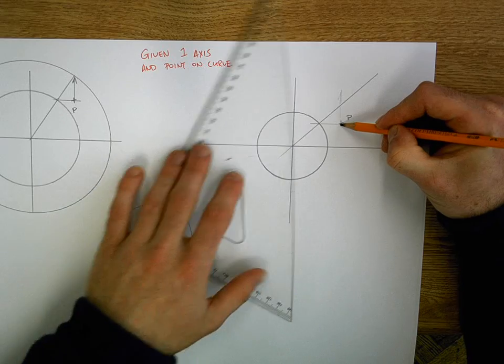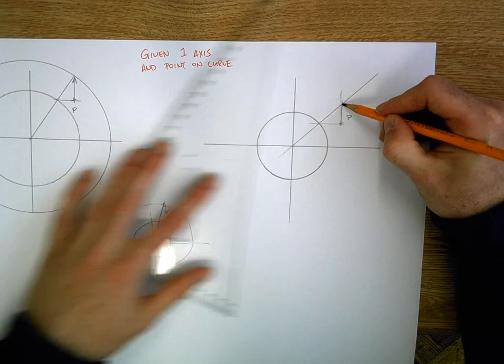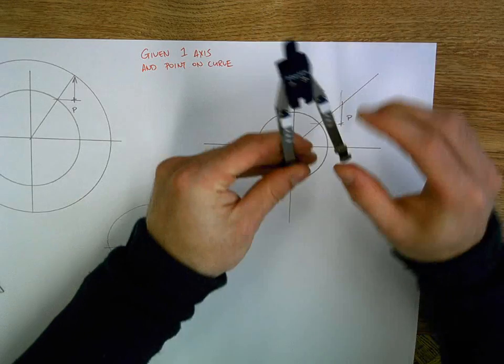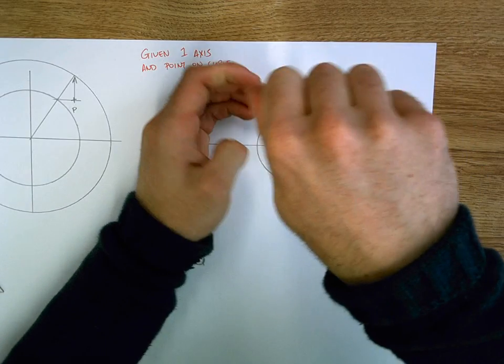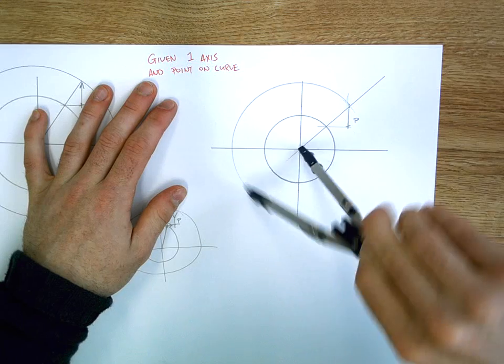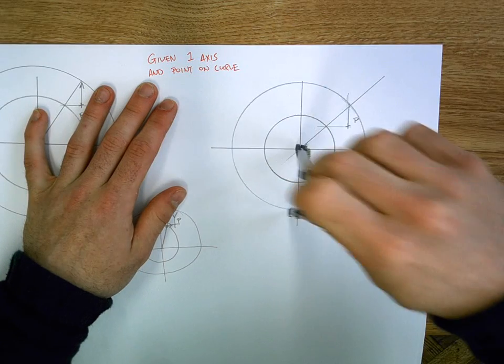And then what we find is we bring a line straight up from point P. It will cut, and that will give us our major circle. So both of those different examples now, we will be able to draw our ellipse after finding our second axis in both of them.